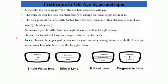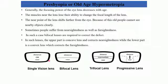Sometimes people suffer from both near-sightedness and far-sightedness. In such cases, bifocal lenses are required to correct the defect. Specs can have various lenses in them. For people who suffer from both types of disorders, we make use of bifocal lenses, which contain both concave and convex lenses.